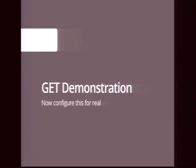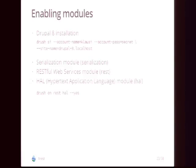I'd like to do a little demonstration. I'll put up some code and calls showing how you can use the API. The first thing you do is install Drupal 8 — I'll show DRUSH commands since I use them a lot. You'll also need the Serialization module and the REST Web Services module. REST has a dependency on Serialization so it enables automatically. We also want to work with HAL so we enable that too — just standard stuff.